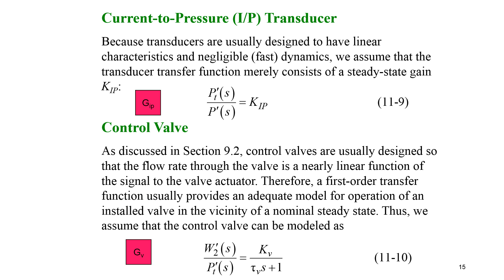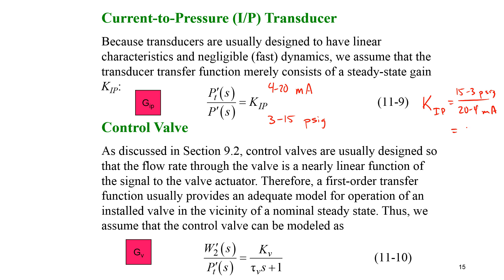We also have a current-to-pressure transmitter. The standard in the process control industry is 4–20 milliamp for current and 3–15 PSIG for pneumatically actuated valves. To get the gain for the I-to-P converter KIP, we calculate (15 − 3) PSIG divided by (20 − 4) milliamp, which gives KIP = 0.75 PSIG per milliamp.